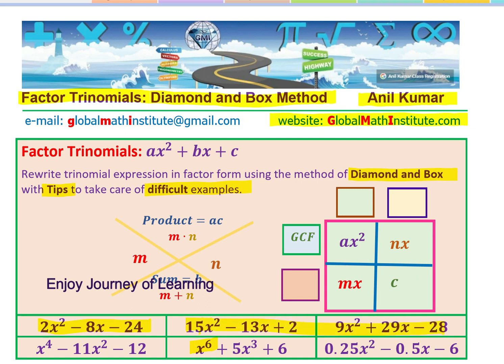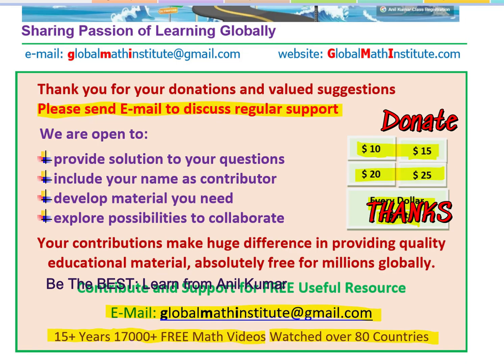We've completed all six questions and learned three key tips: first, always group-factor out any common factor (including decimals/fractions); second, use prime factorization when the product of leading coefficient and constant is large; third, recognize higher-degree trinomials by substitution. Feel free to write a comment, share your views, and keep contributing so we can reach millions. Thanks for your time and all the best.